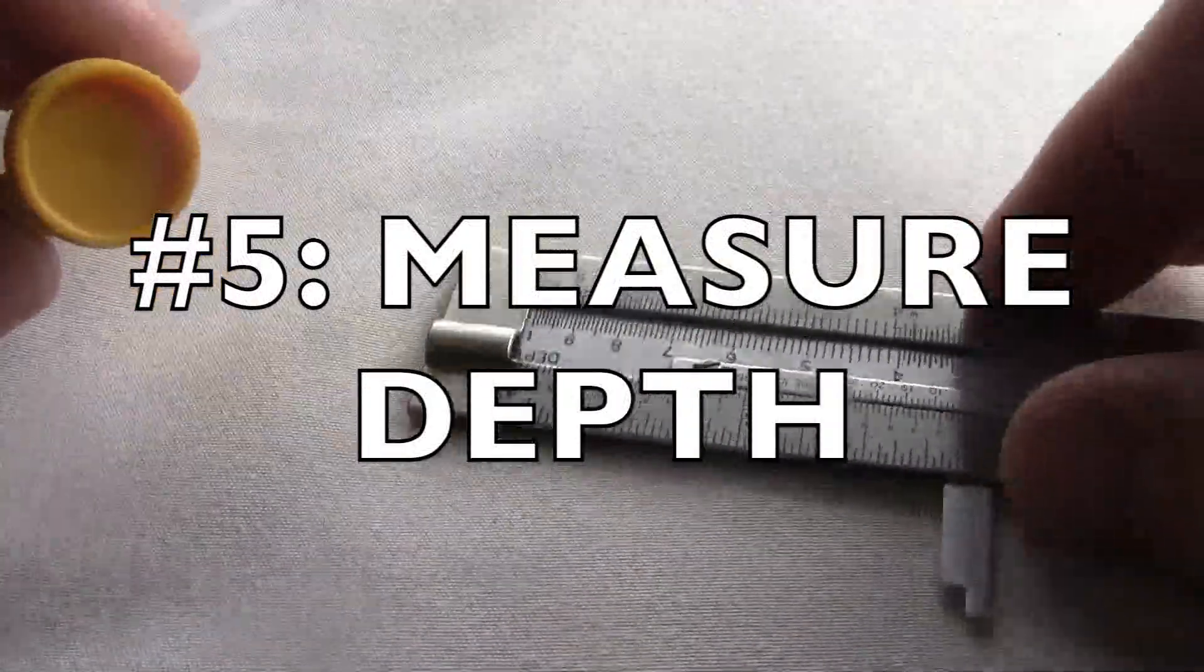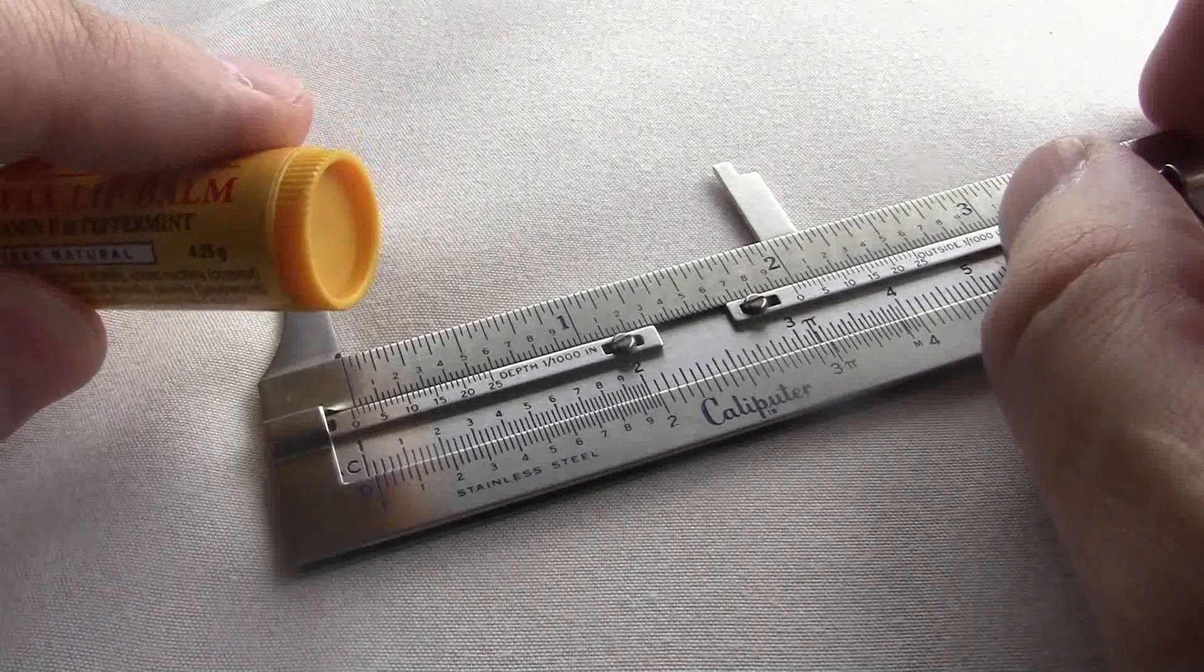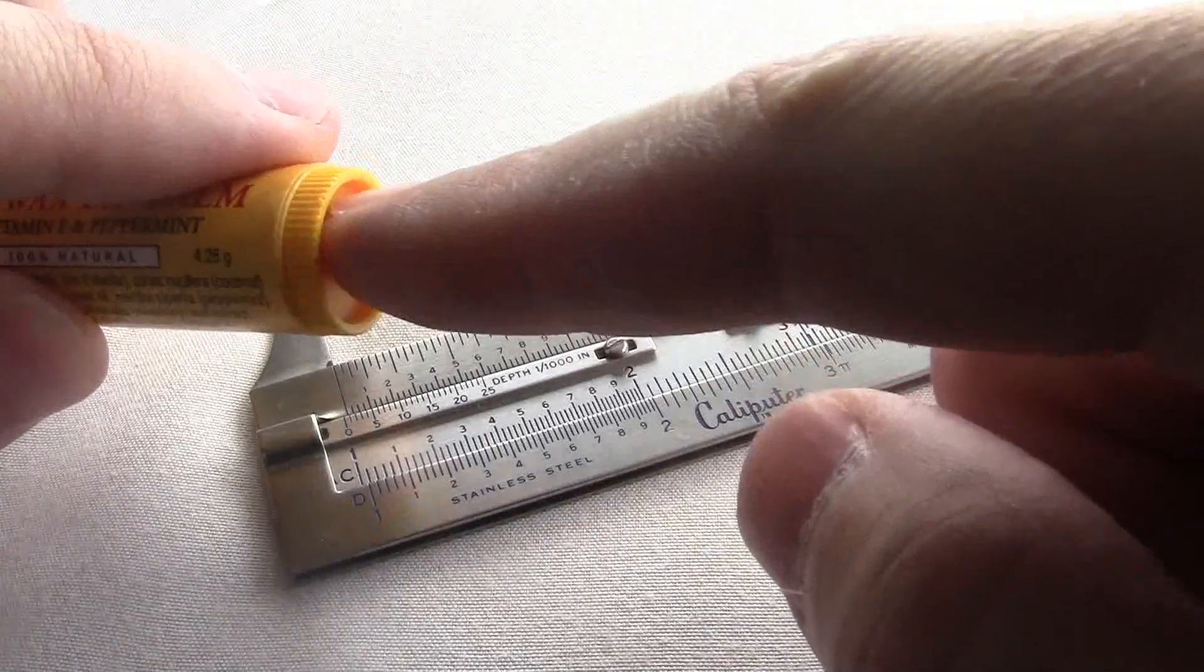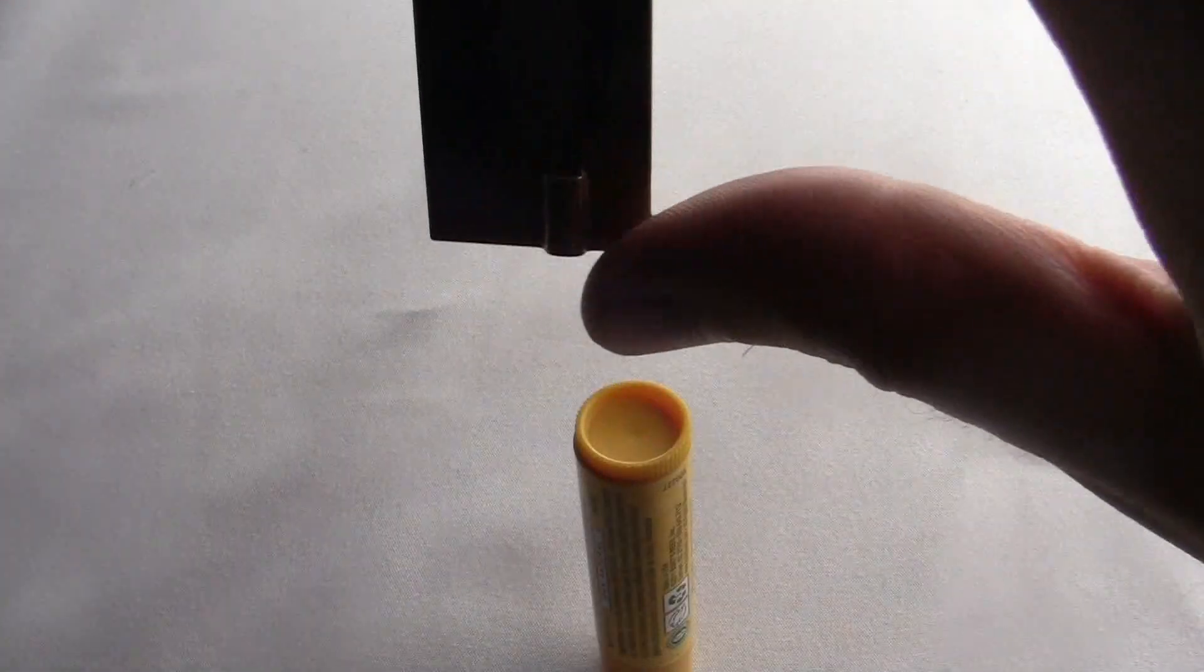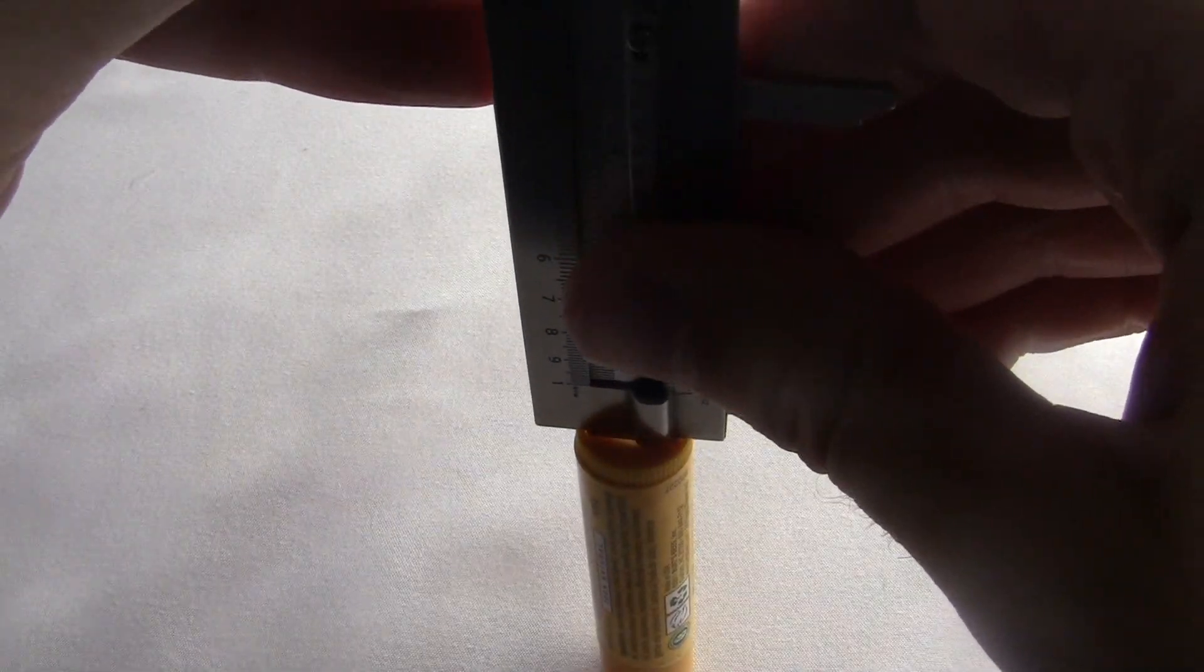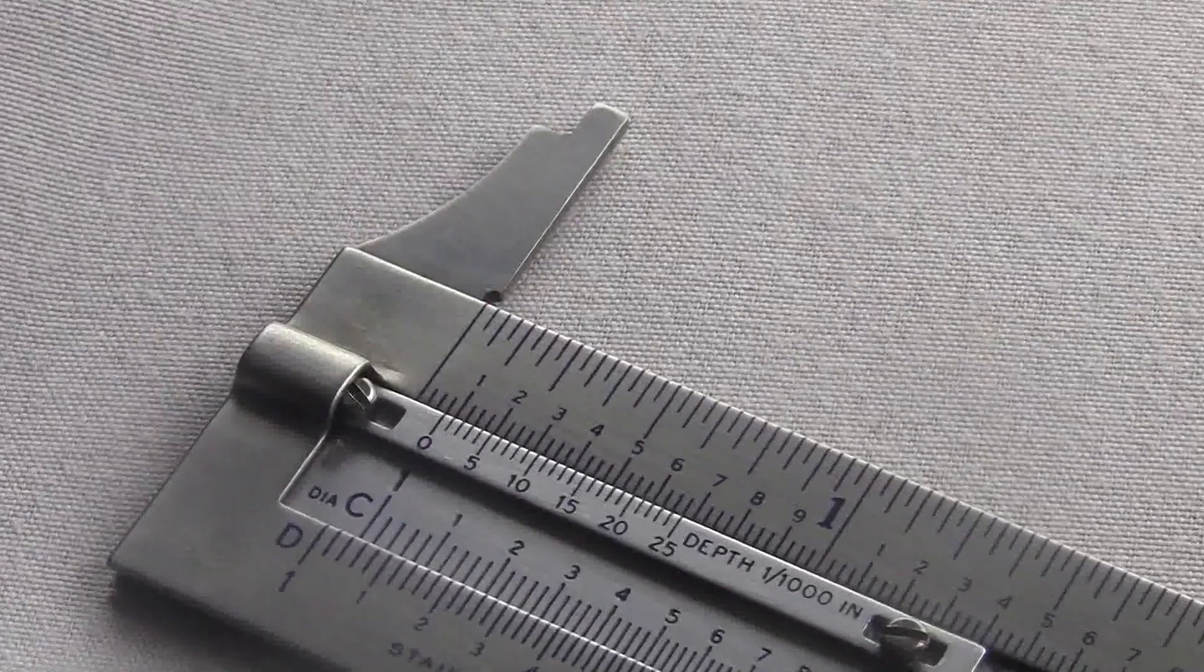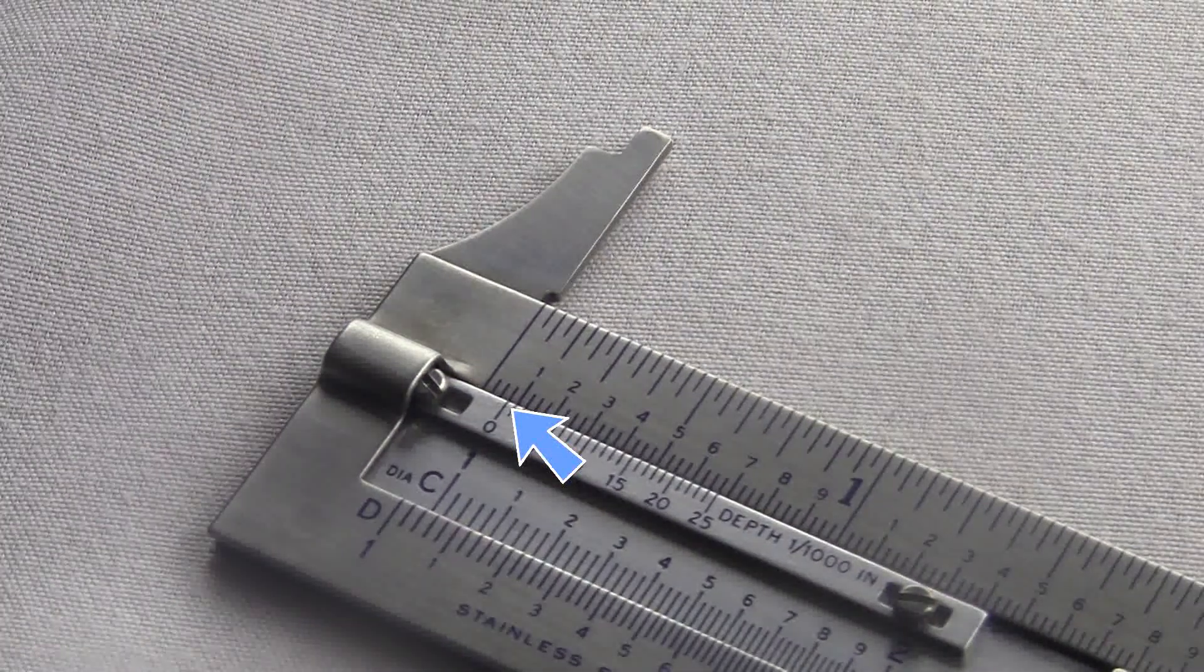Number five, measure the depth. This is to measure the depth of some opening. Like, how deep is my love for Burt? I mean, how deep is the little dent on the bottom of this Burt's Bees tube? You stick the caliputre on the edge of the opening. And then you slide the arm down into it until it hits the bottom. Then you read the answer from the zero mark on the little depth scale. This one looks like 0.075 inches.